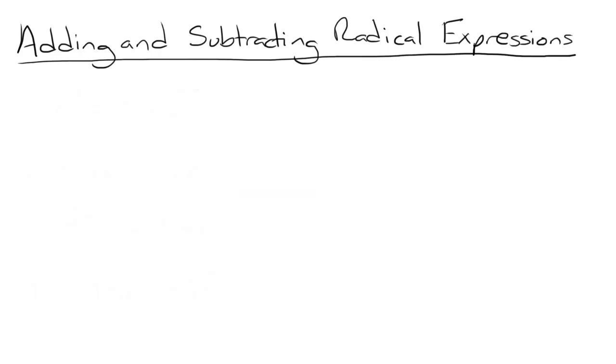But what if we're asked to solve something like 25 root 3 plus 6 root 27? At first glance, it doesn't look like this is possible because our radicals are not the same. But it turns out it is possible. All we have to do is simplify our second term.